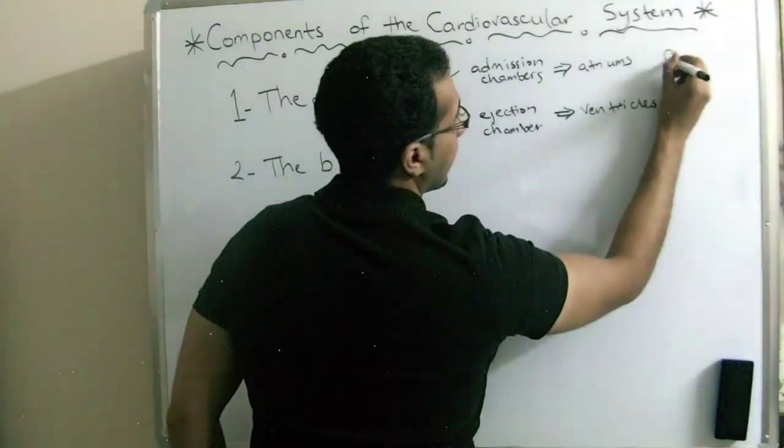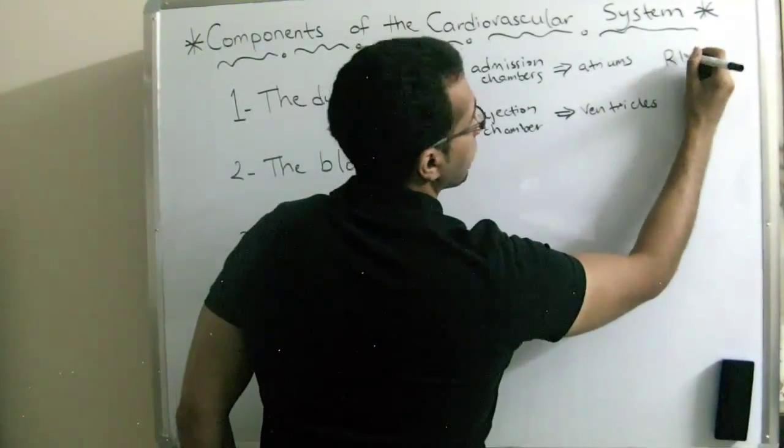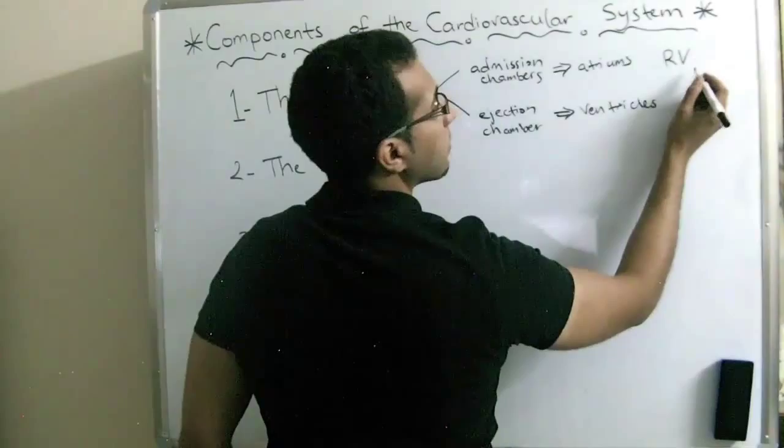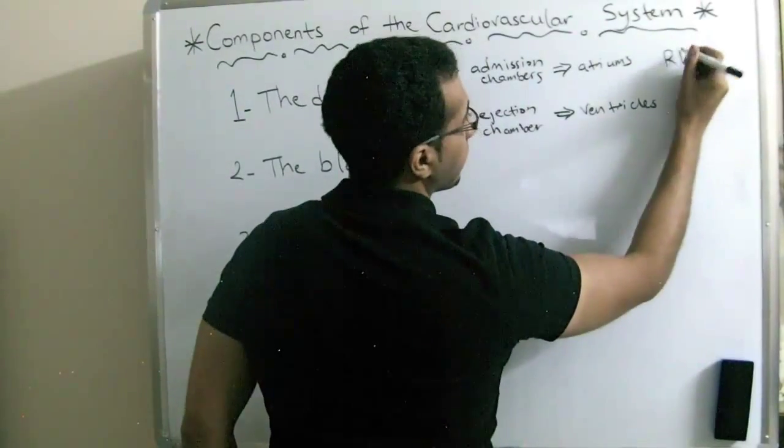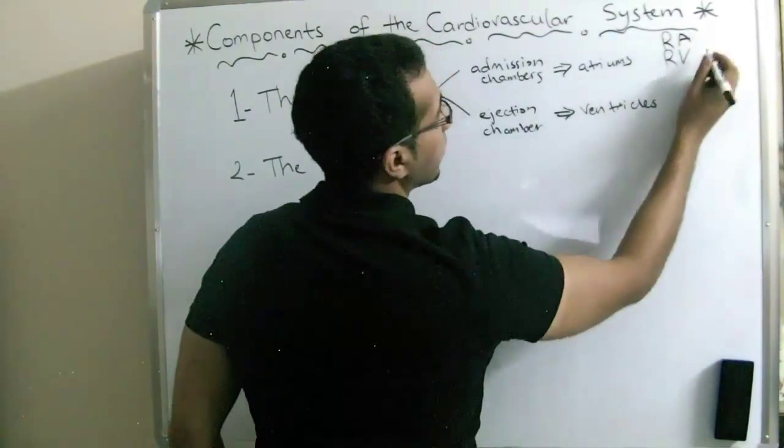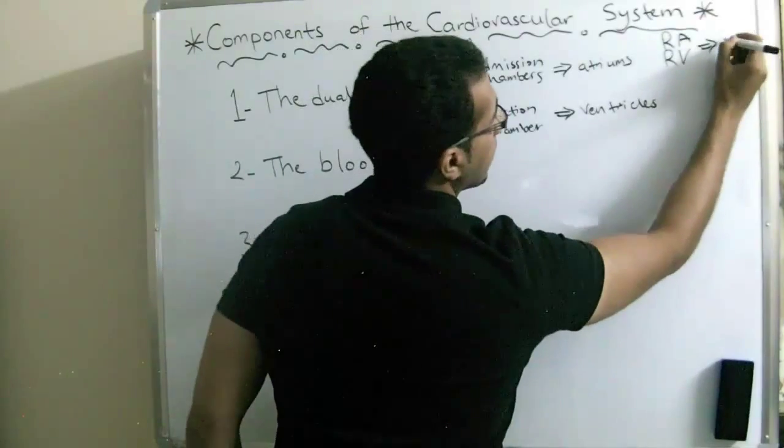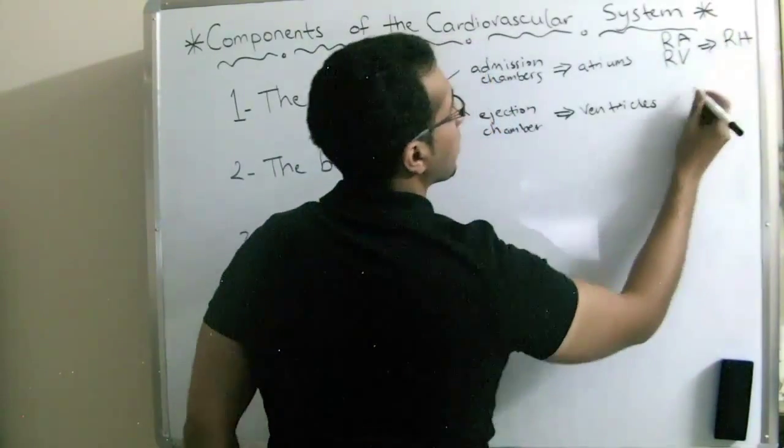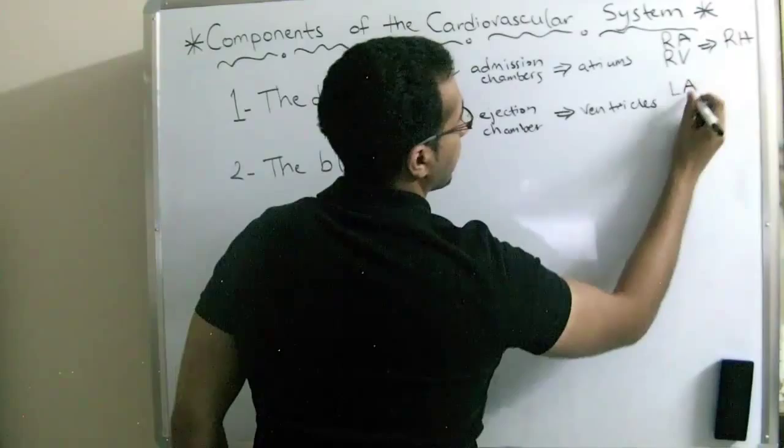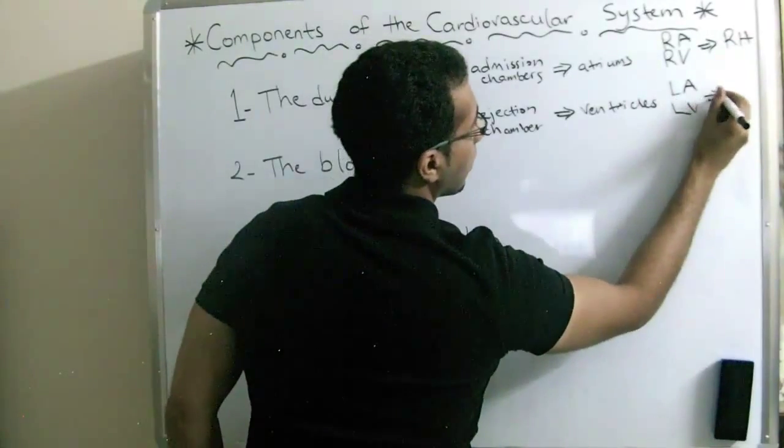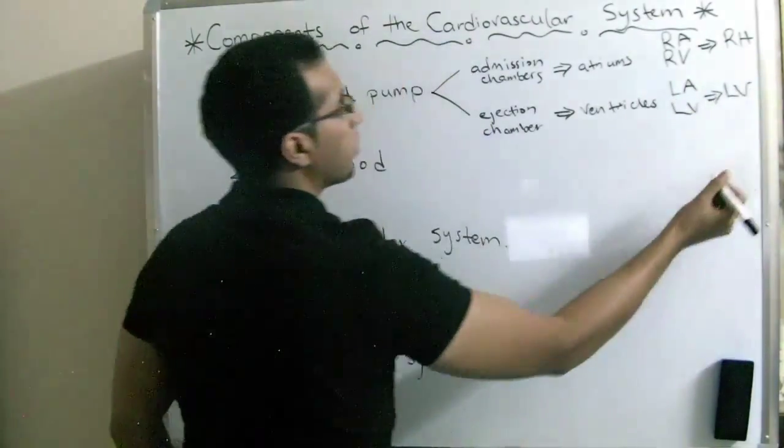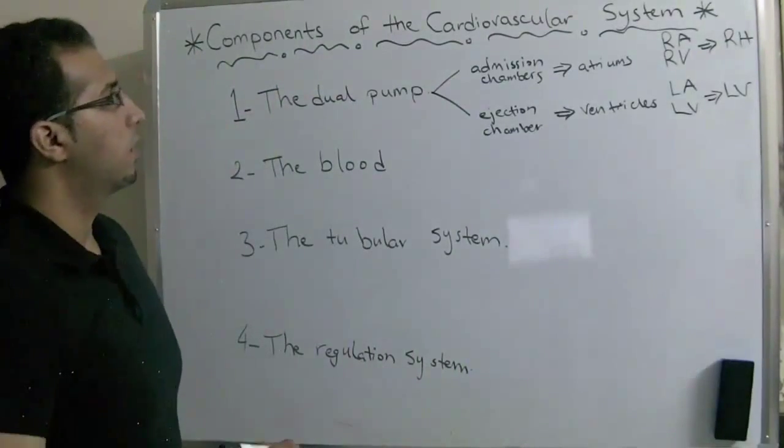The right atrium and right ventricle form the right heart. And the left atrium and the left ventricle form the left heart.